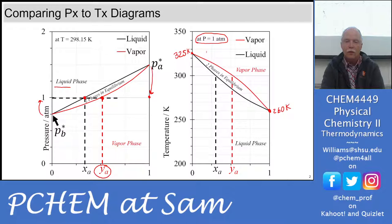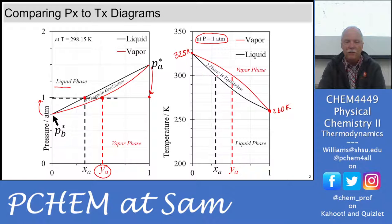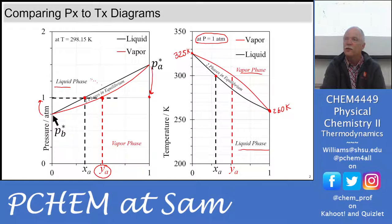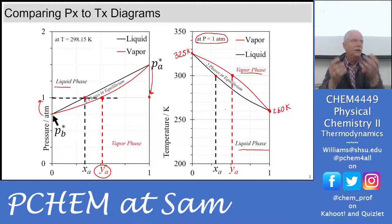We have our pure boiling points on either side because the diagram is set at one atmosphere. The same x_A mixture that boiled at room temperature on the PX diagram appears here too. Another swap: at low temperatures we have liquid, at high temperatures we have pure vapor, and at intermediate temperatures we have the two phases in equilibrium. So the liquid phase is on the bottom and the vapor phase is on top — reversed from the pressure diagram. The top curve is the vapor composition line and the bottom curve is the liquid composition line.